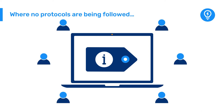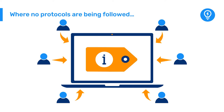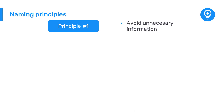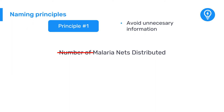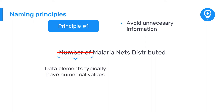To prevent this issue, you can apply some key principles to make it easier for end users to locate the data elements they need. The first principle is to avoid unnecessary information. For example, there is usually no need to include phrases such as 'number of' in data elements. Remember that data elements typically have numerical values, so we can assume it refers to a number unless otherwise stated.